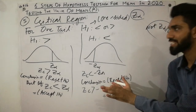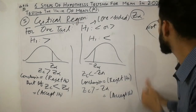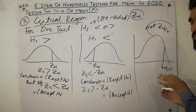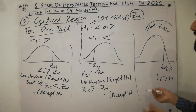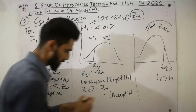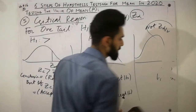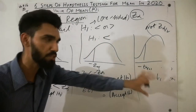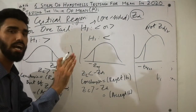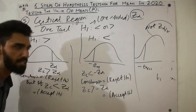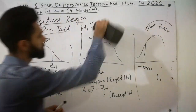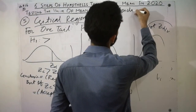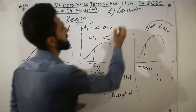Similarly, for the t distribution in one-tail tests: if t-calculated is greater than t-alpha-v (for the right tail), we reject H-naught. For the left-tail case, if t-calculated is less than minus t-alpha-v, we reject H-naught. These cases apply to the t distribution exactly as they do to the Z distribution. Step six — the final step — is the conclusion: either reject H-naught or accept H-naught.